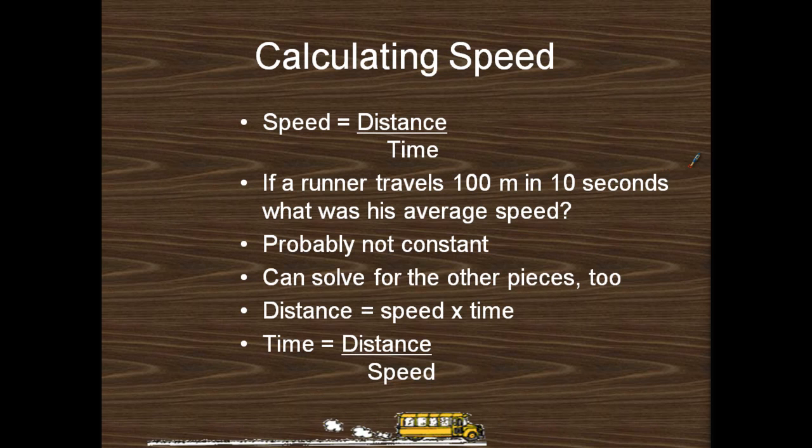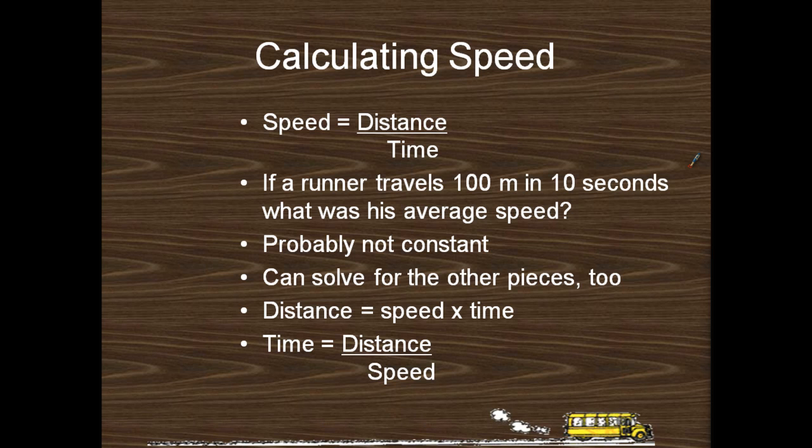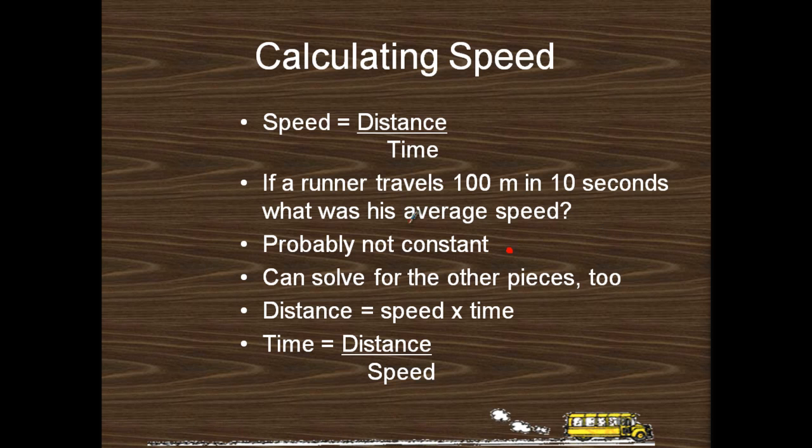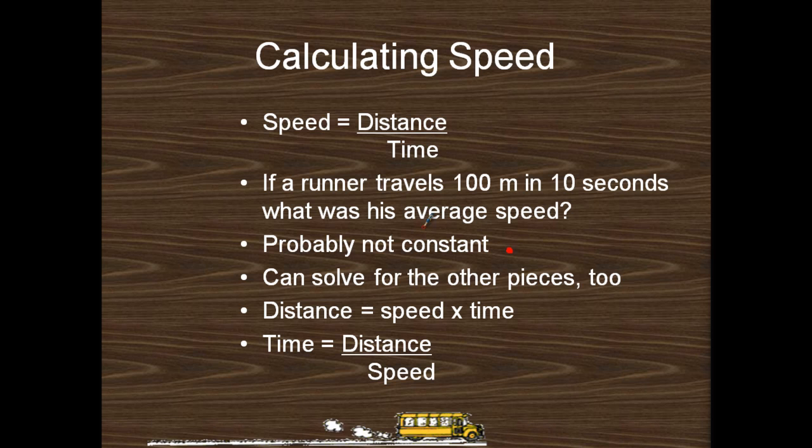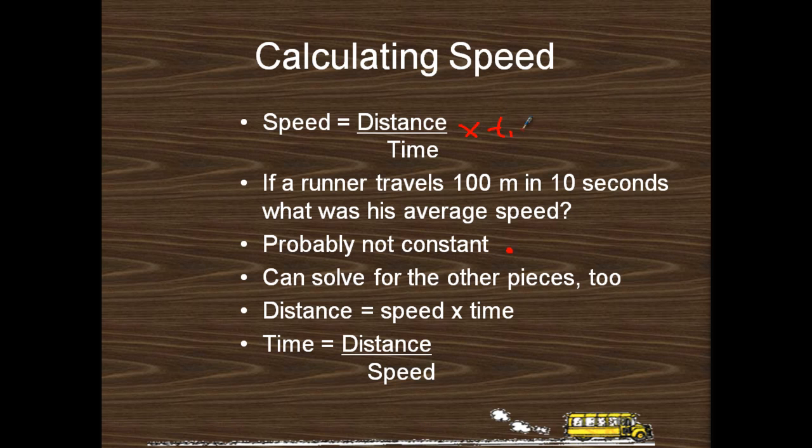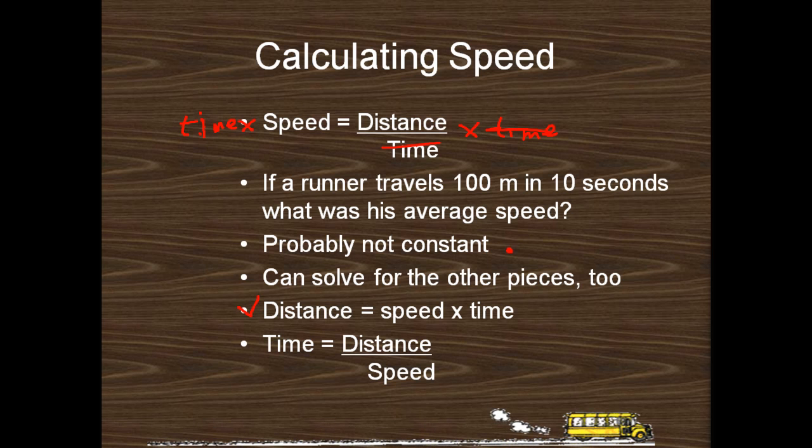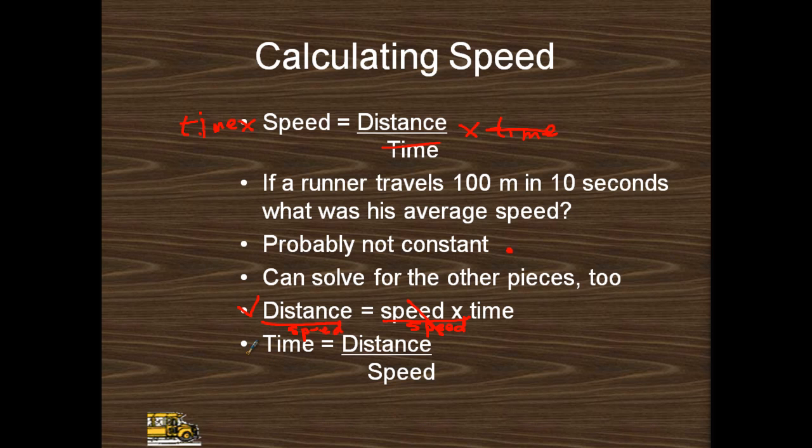Speed equals distance over time. So if a runner travels 10 meters in 10 seconds, what is the average speed? That's probably not constant for a runner because they'll start from rest and then they speed up to that speed. You can also just rearrange this using a little bit of algebra to solve for the other things. Like for instance, multiply both sides by time. That crosses out and you're left with this equation. And then we can go from that equation, divide both sides by speed. We're left with the bottom equation which is time equals distance over speed.